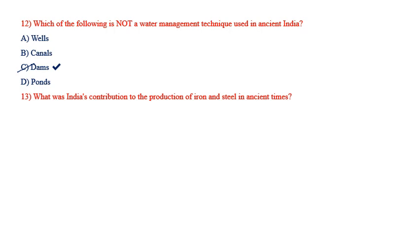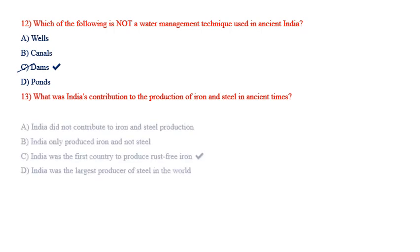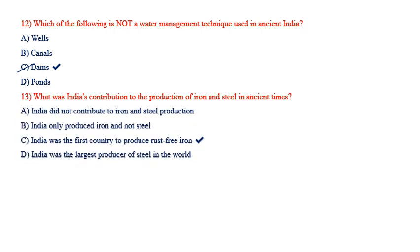What was India's contribution to the production of iron and steel in ancient times? Options: India did not contribute; India only produced iron and not steel; India was the first country to produce rust-free iron; India was the largest producer of steel in the world. The answer is India was the first country to produce rust-free iron.